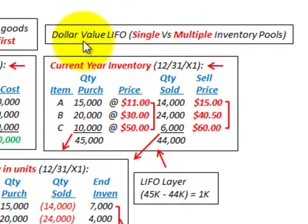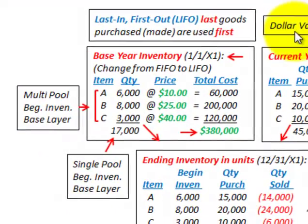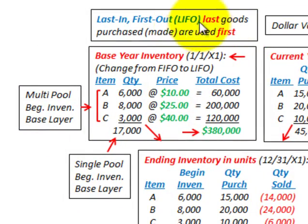What we're going to go over here is the dollar value LIFO method and how we'd handle our inventory valuation. We're going to look at some basic differences between a single pool inventory and multiple pools of inventory. LIFO stands for last in, first out — where the last goods purchased or made are used first.